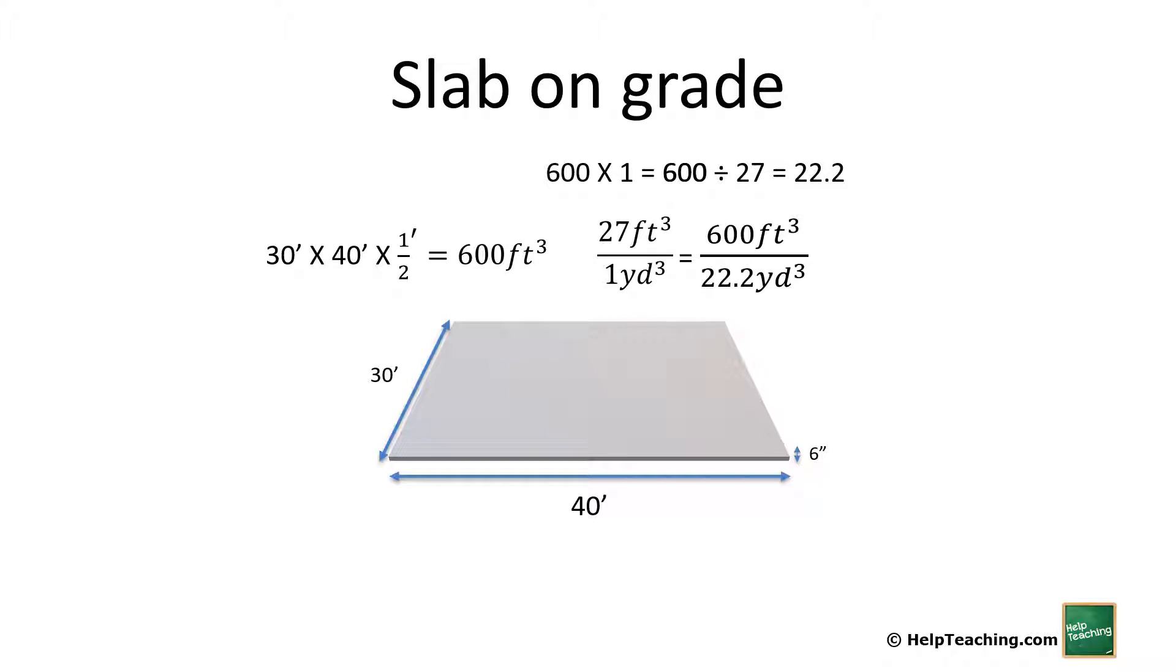We always want to make sure we have a little bit extra. Things go wrong, there's spillage, calculations aren't quite right, accidents happen - we don't want to run short. Different companies suggest different percentages to order extra, generally between 3 and 5 percent. This depends on the type of pour and your experience as a contractor. A standard reference is 5 percent. So 22.2 times 1.05 (which is 100% plus the extra 5% for overage) gives us 23.25 yards to order.